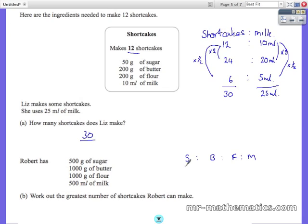Using our original recipe for 12 people, you have got 50g of sugar, 200g of butter and flour.